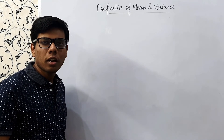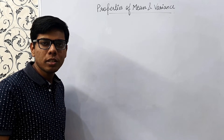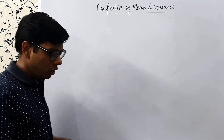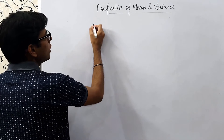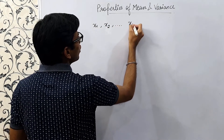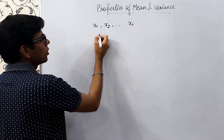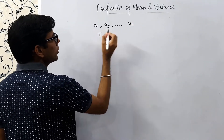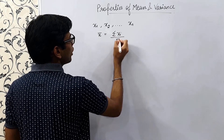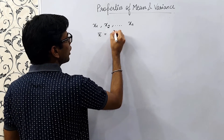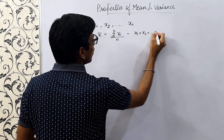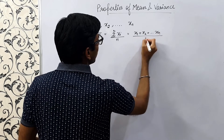In my earlier videos I have explained about mean and variance, so please check that out first in the links given below. Consider our data x1, x2 till xn — we have n observations. Mean is defined as x̄ = Σxi / n, where i goes from 1 to n. That is nothing but the sum of all observations divided by n.